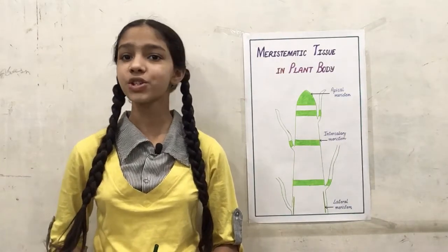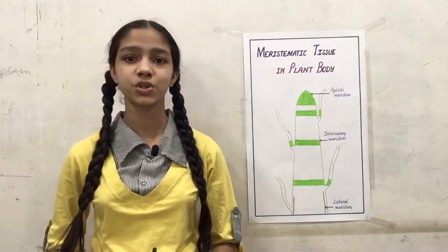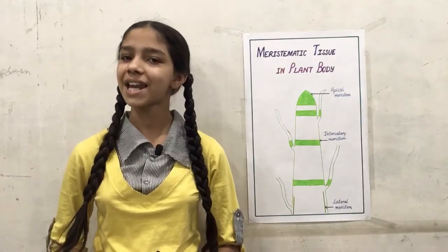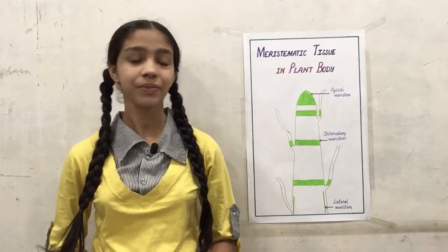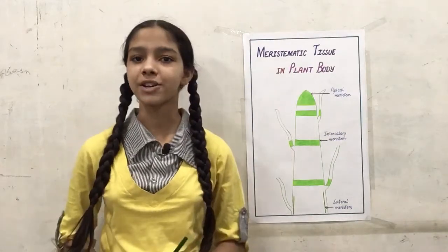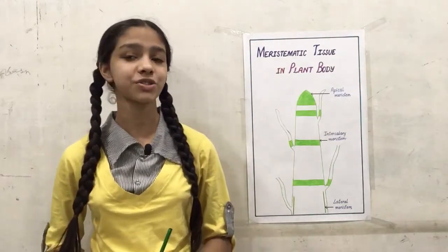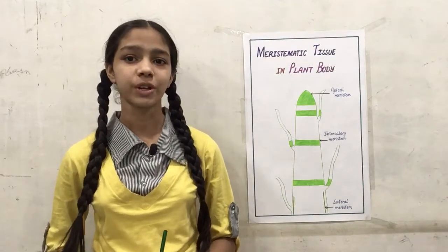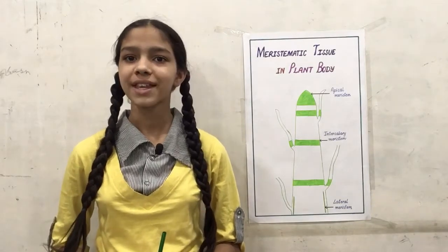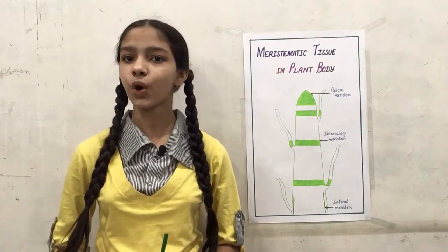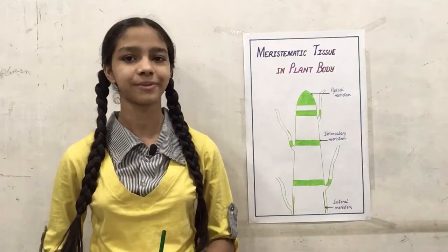There are two types of tissues: plant tissue and animal tissue. Meristematic tissue is a part of plant tissue. It is also known as dividing tissue because it helps in the growth of the plant.